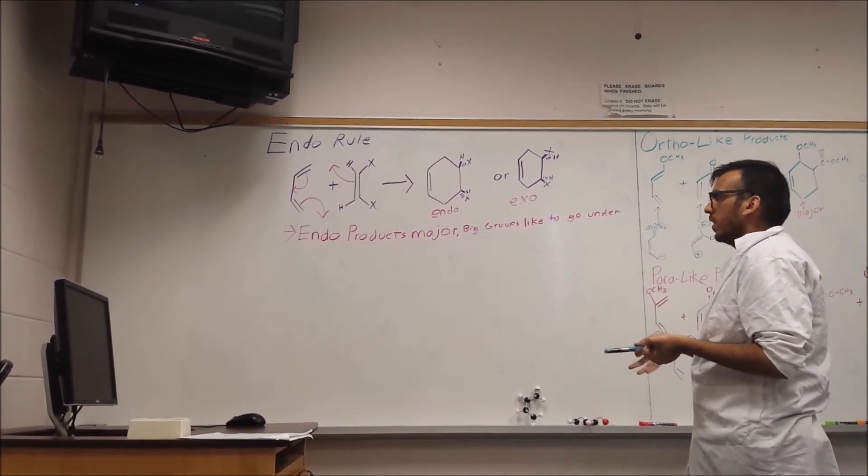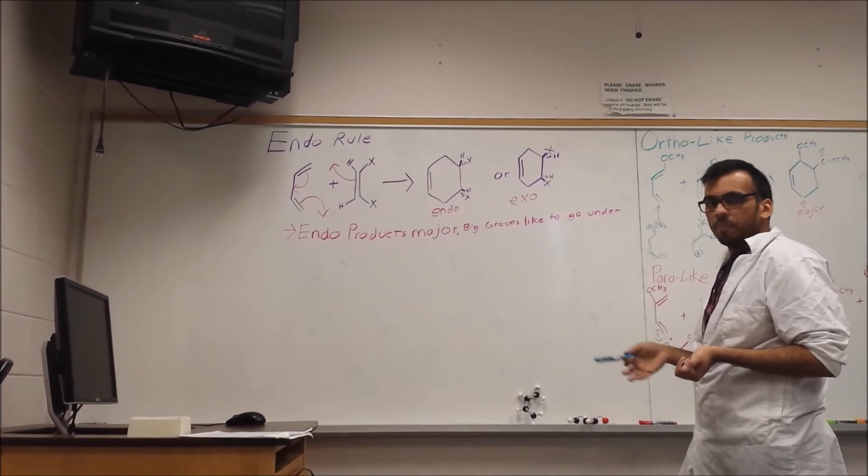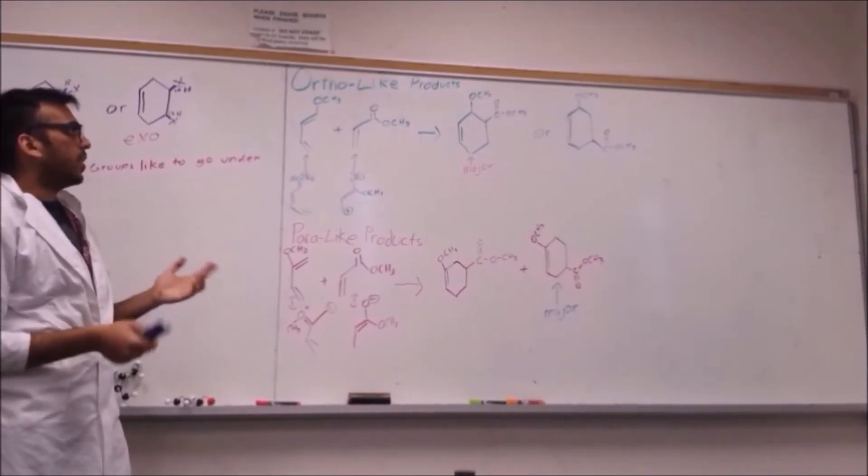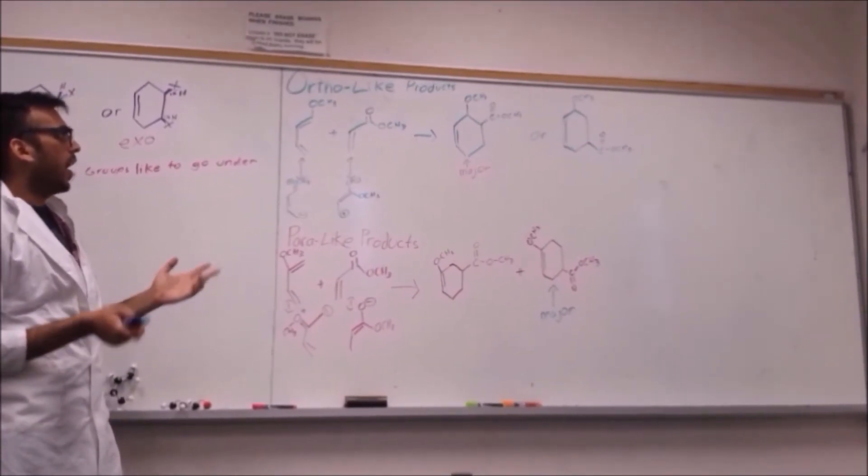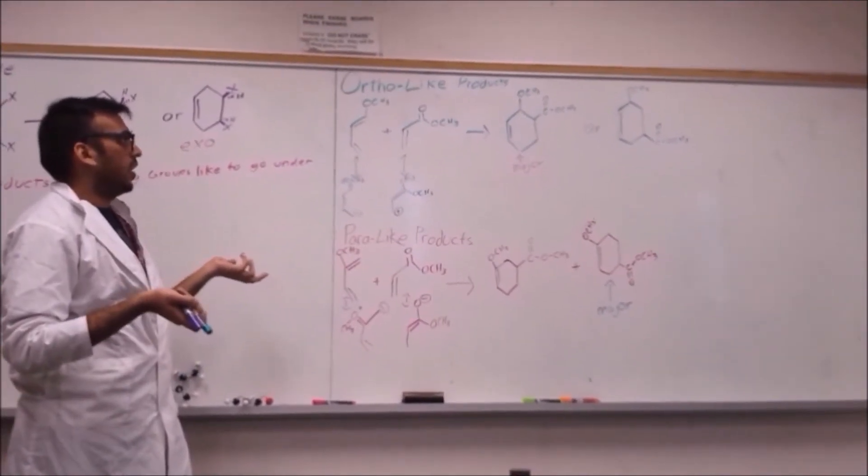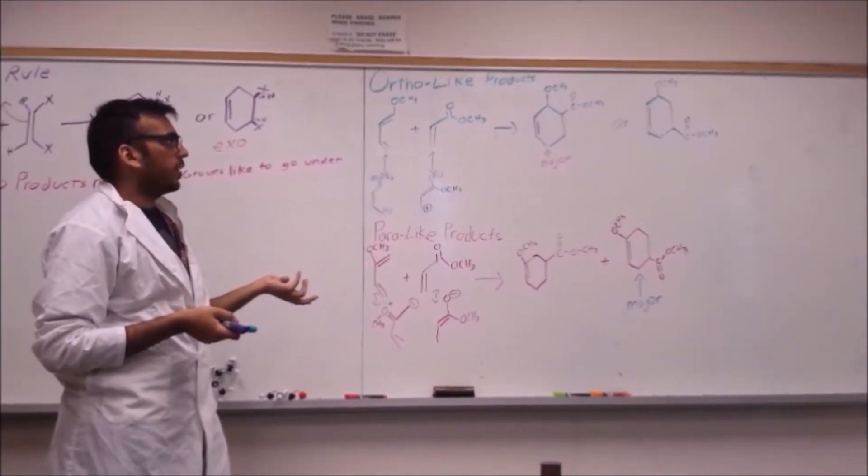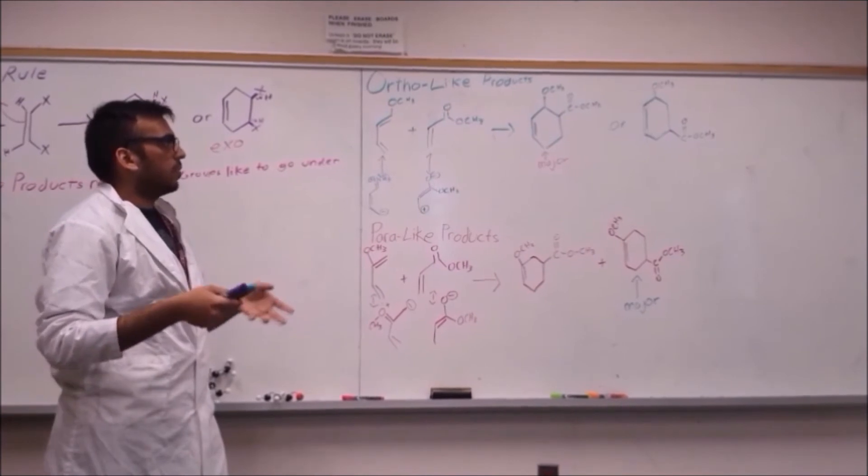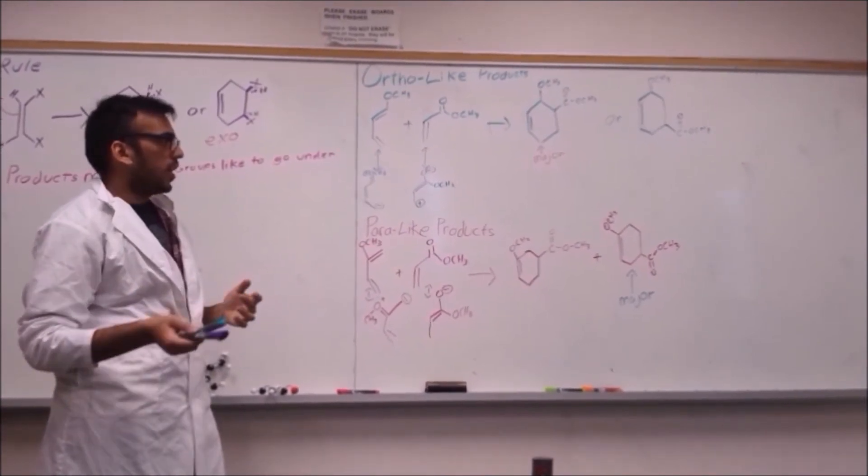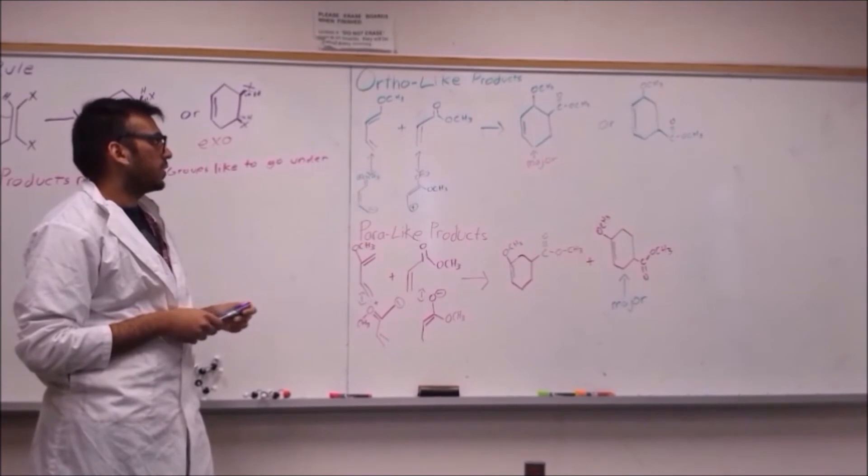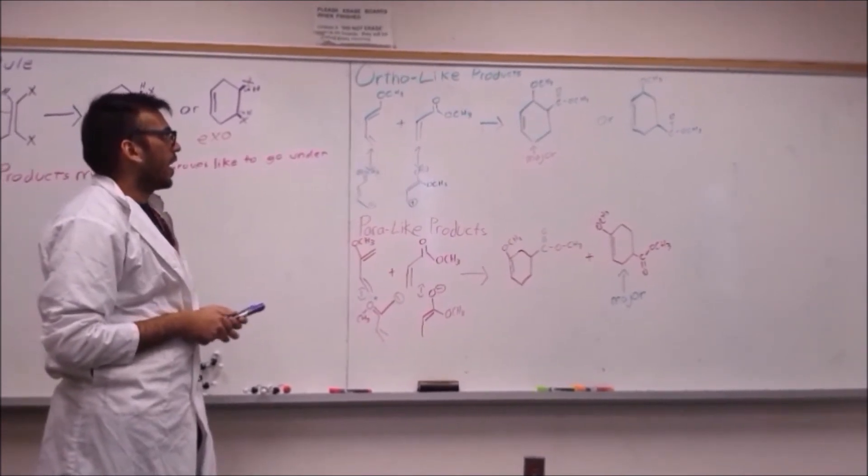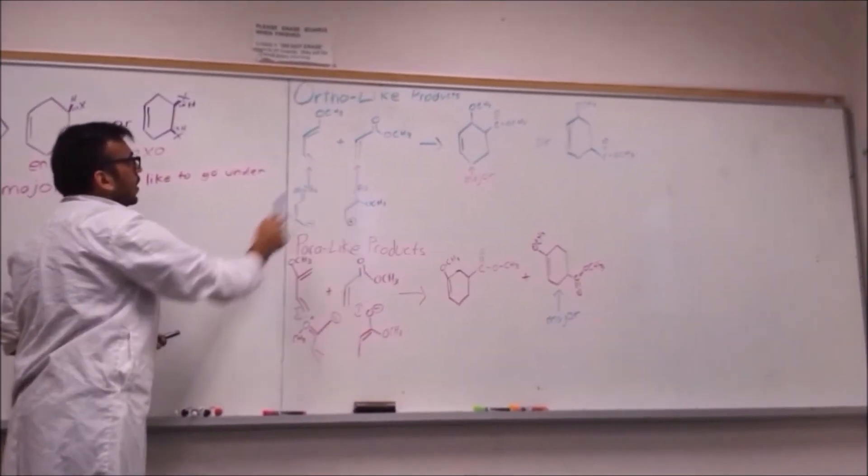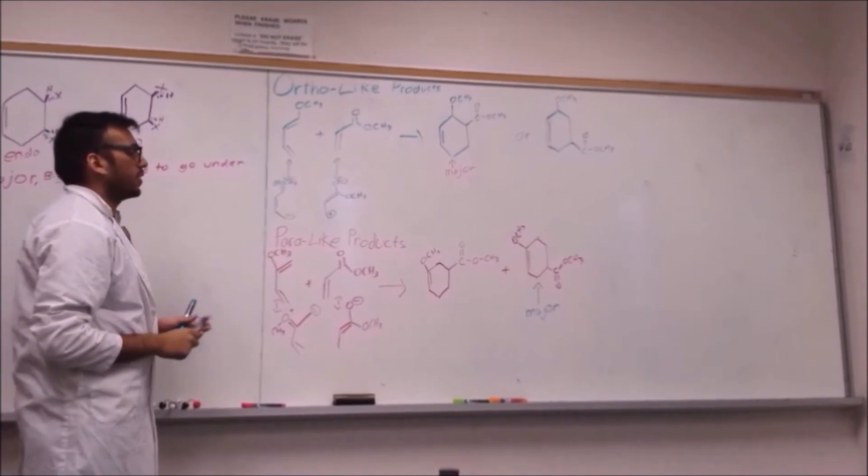And how much the endo is favored depends heavily on the group as well. So when we have asymmetrical reactants, and especially ones that can be involved in resonance, we won't end up with equal ratios of all the possible products. We will have one product preferred over another.